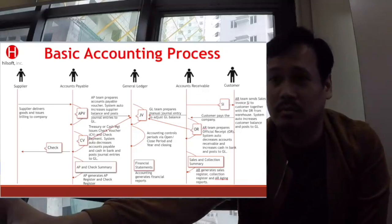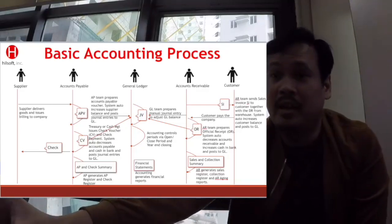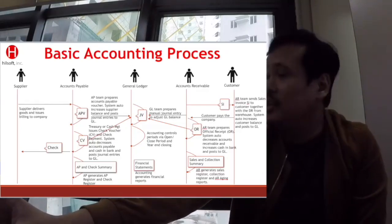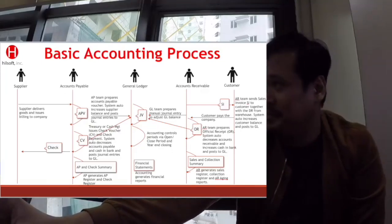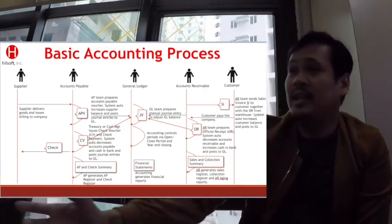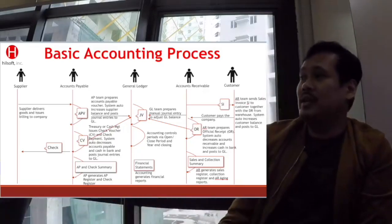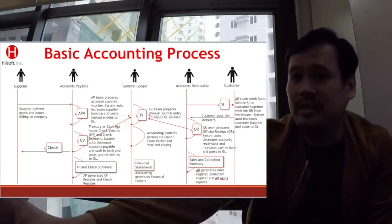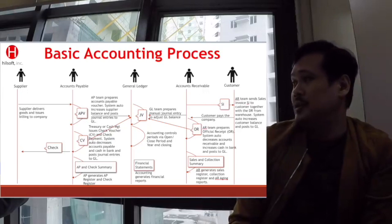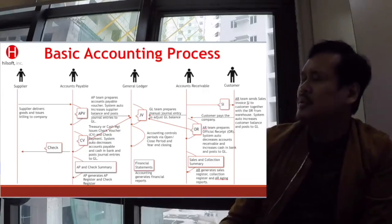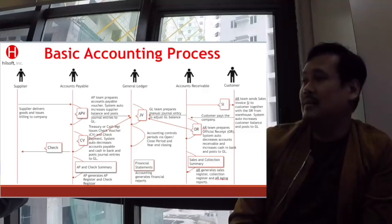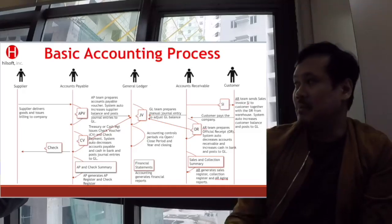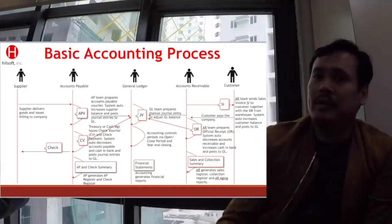Now when it's time to pay — say after 30 days — you prepare a check, together with a check voucher (CV). A check voucher is a credit memo of your cash-in-bank, showing that you released money to pay that particular AP. You'll also have a report — a summary of the checks issued.